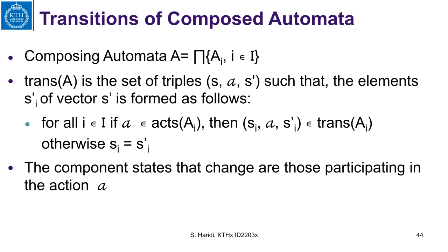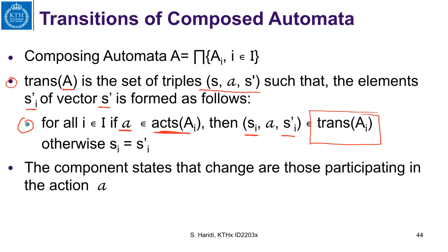The set of transitions of the composed automaton is a set of triples such that each element S prime I of the state vector is formed as follows: for each component automaton, if A is an action of that component automaton, then (S_I, A, S_I prime) is an element of its transition relation A_I. Otherwise, the component S_I after taking the action does not change, so S_I equals S_I prime.